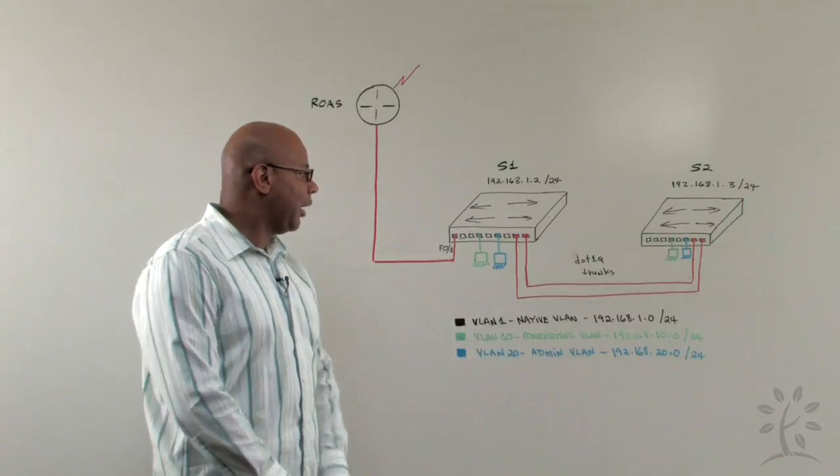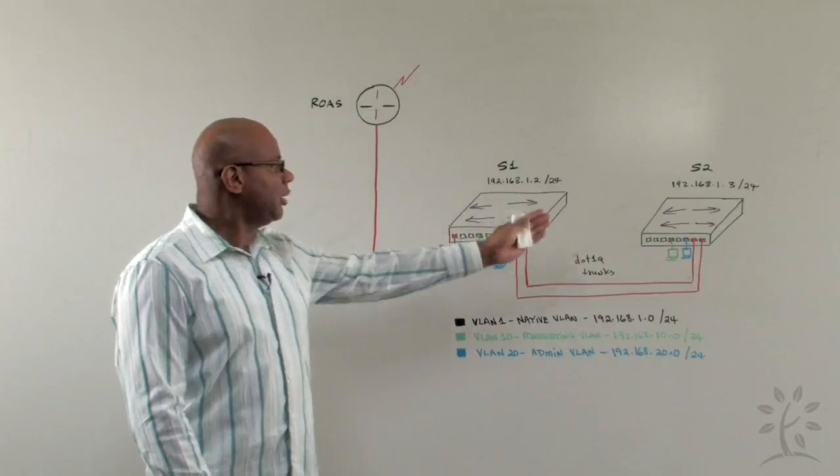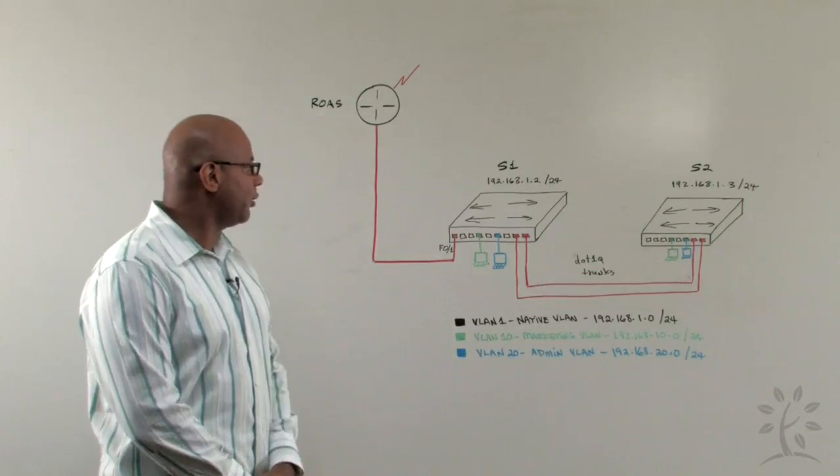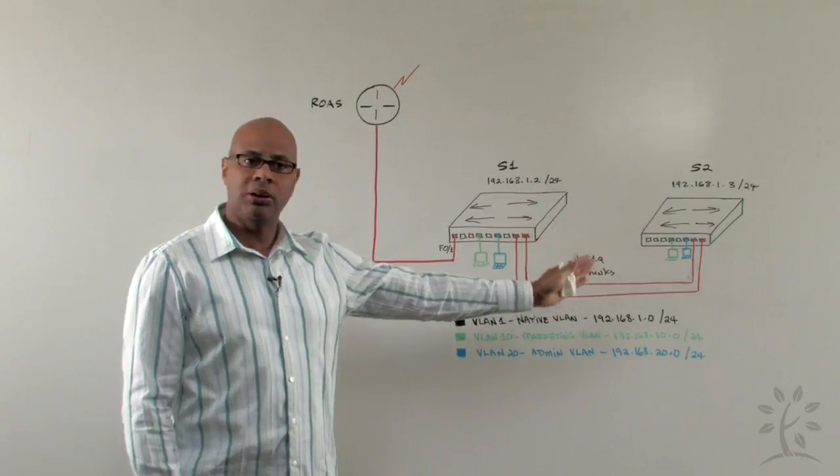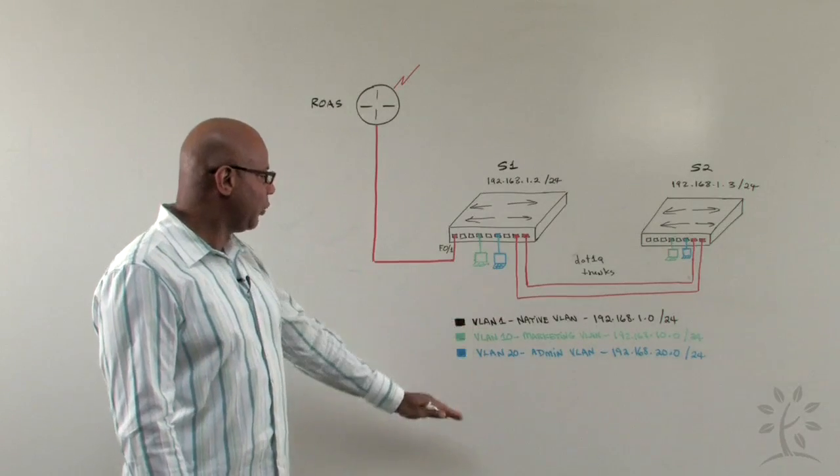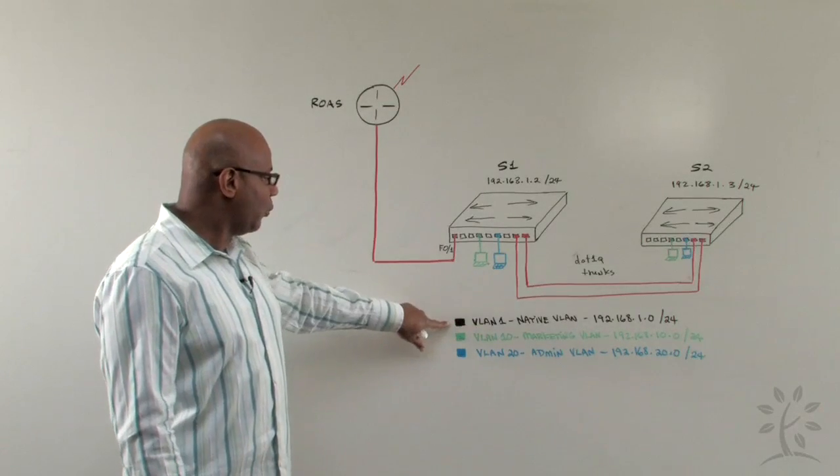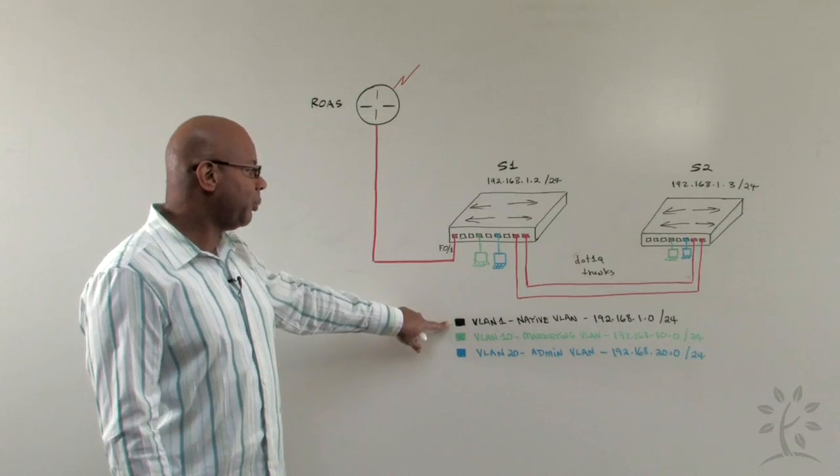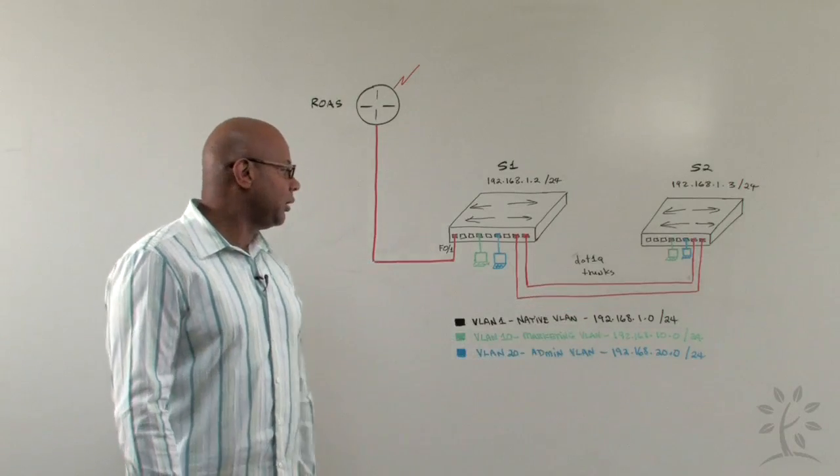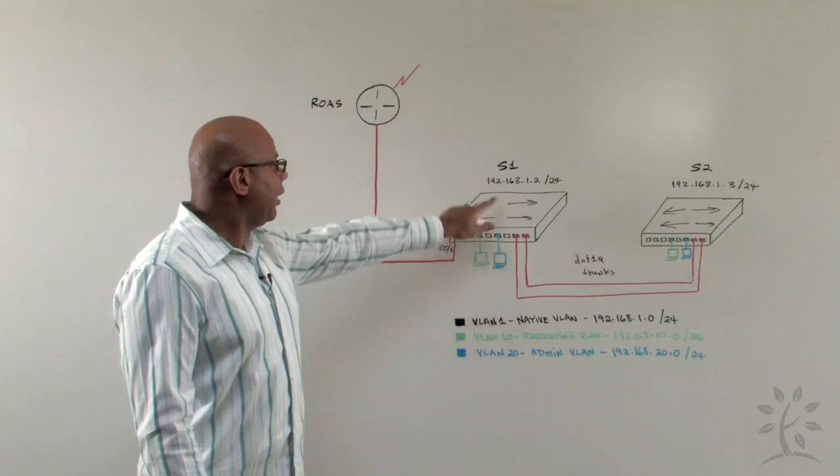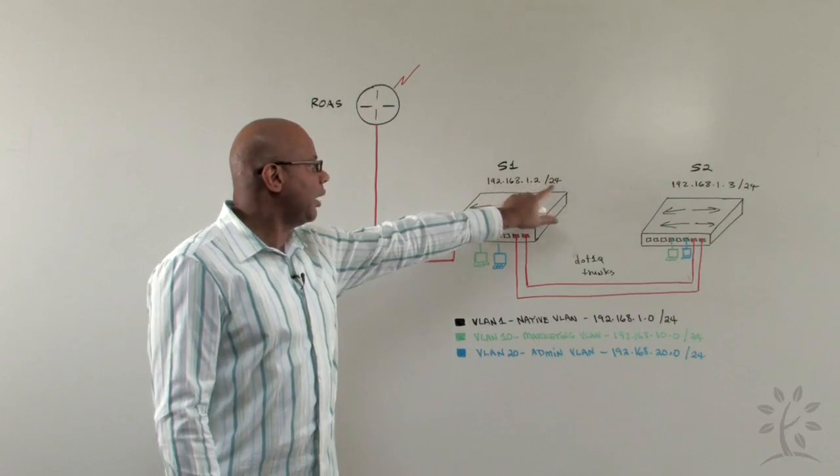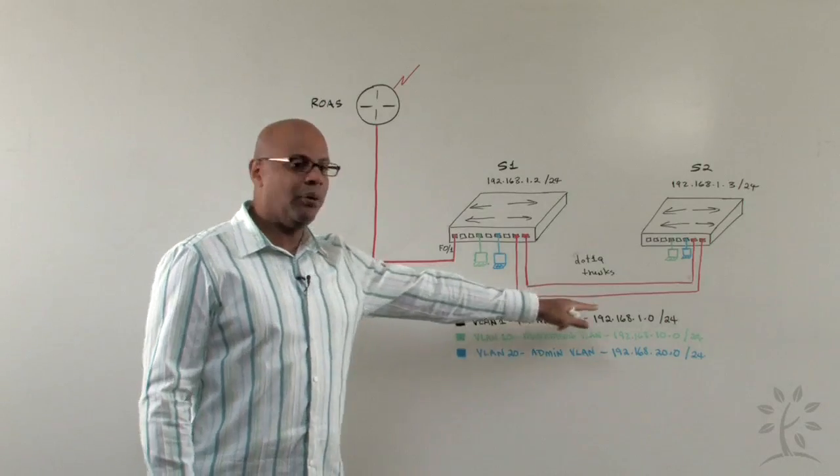If we look at our topology on the board, we have two switches, S1 and S2, and they are connected with 802.1Q trunks so that we can extend VLAN information from one switch to the other. Just for simplicity, I've used different colors to show you the different VLANs we have. We all know that VLAN1 is the native VLAN, which is used for management purposes, and we're assigning the IP address of 192.168.1.0 to that particular VLAN. The switches themselves are assigned an interface VLAN1, the 1.2 address and the 1.3 address for S2 within the same network.